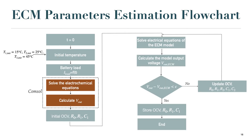The estimation process of the electric model parameters starts first by fixing the battery temperature at the desired value. Then we apply a succession of discharge pulses to the battery model that we developed previously in COMSOL Multiphysics. Then we use the acquired data to estimate the electric model parameters.